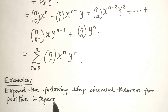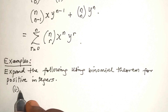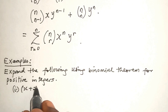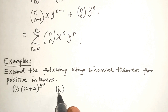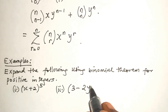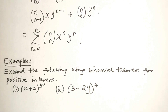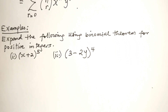The first one is x plus 2 raised to power 5, and the second one is 3 minus 2y raised to power 4. Now let's do the expansion.